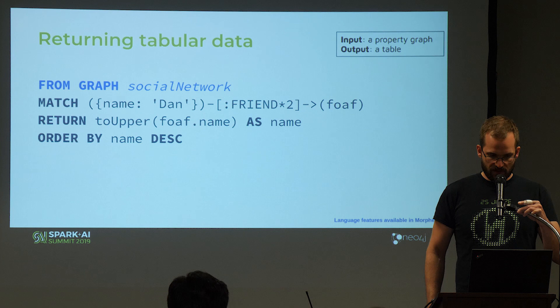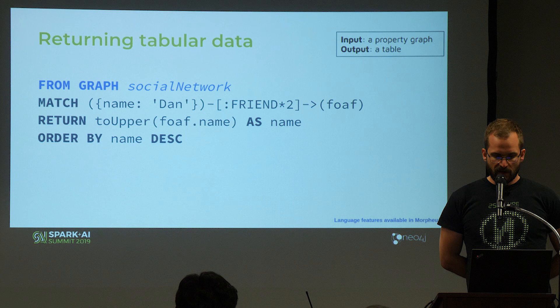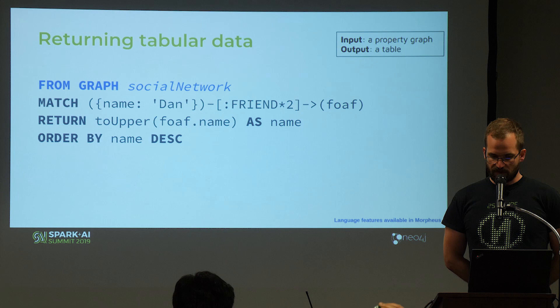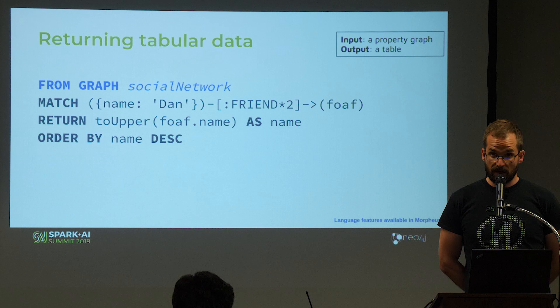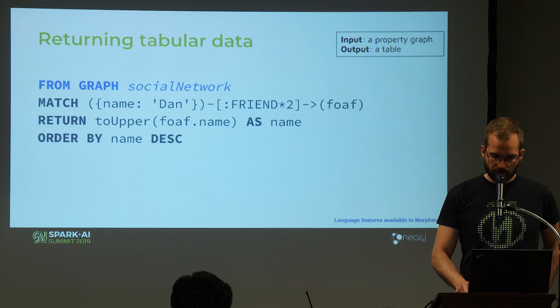Here's an example: the blue part is the new Morpheus language feature, the black part is Cypher 9. In this query we look for friends of a friend (FOAF) — we're looking for friends connected to the friends of Dan, returning their names ordered by name. This is a Cypher 9 query. We show that you can run this query on a specific graph identified by the name 'social network' using the FROM clause. The input is a property graph and the output is a table as you know from Neo4j.